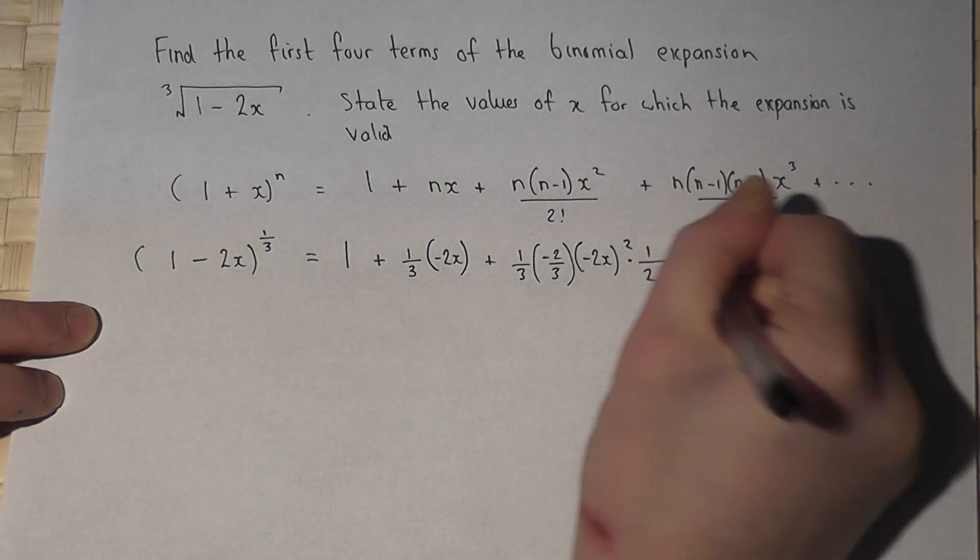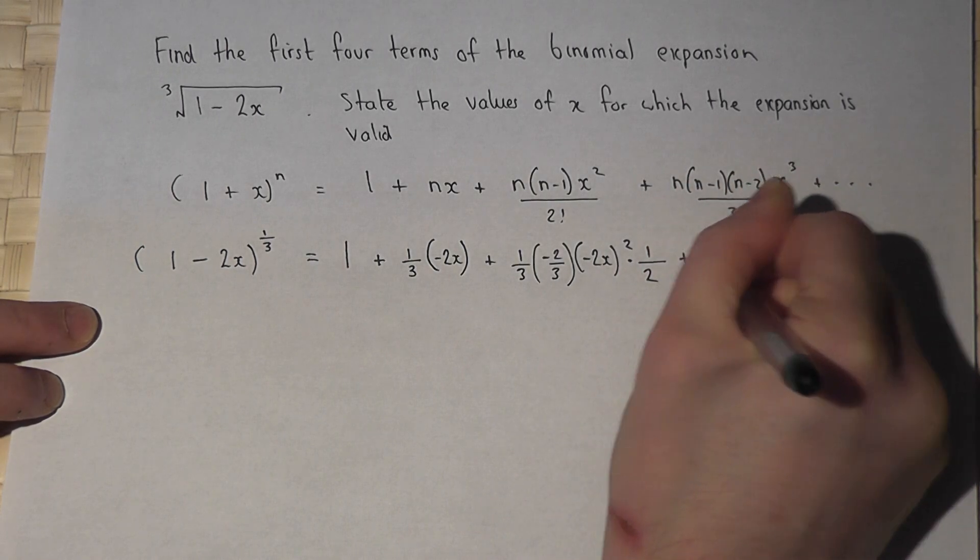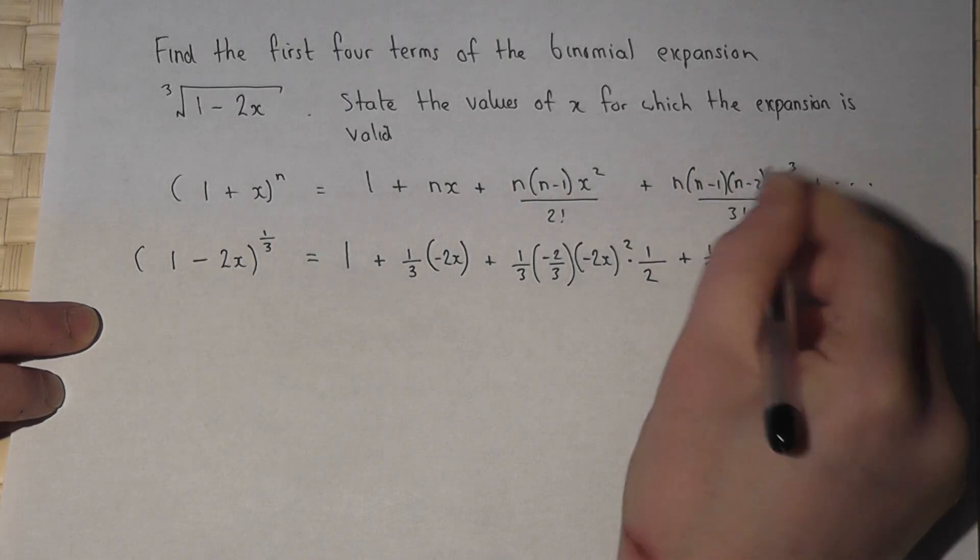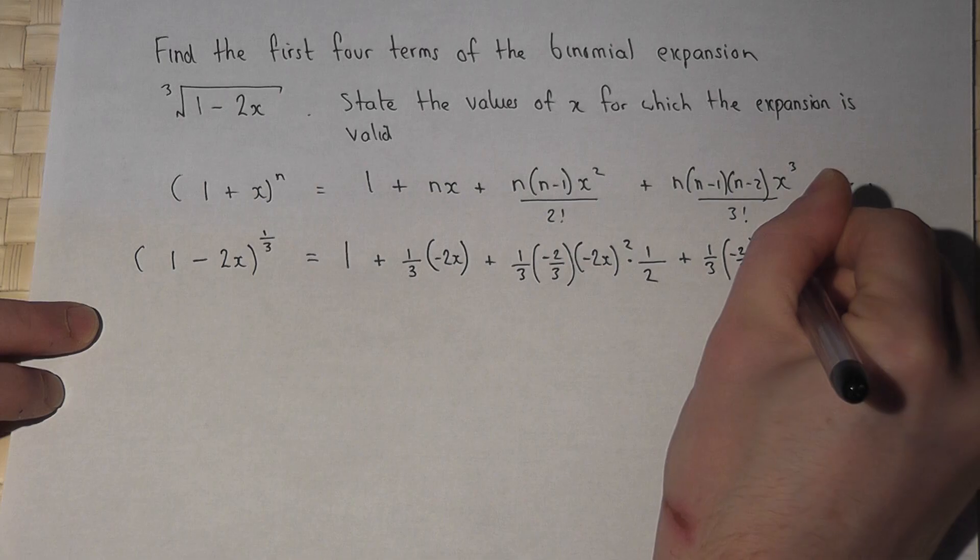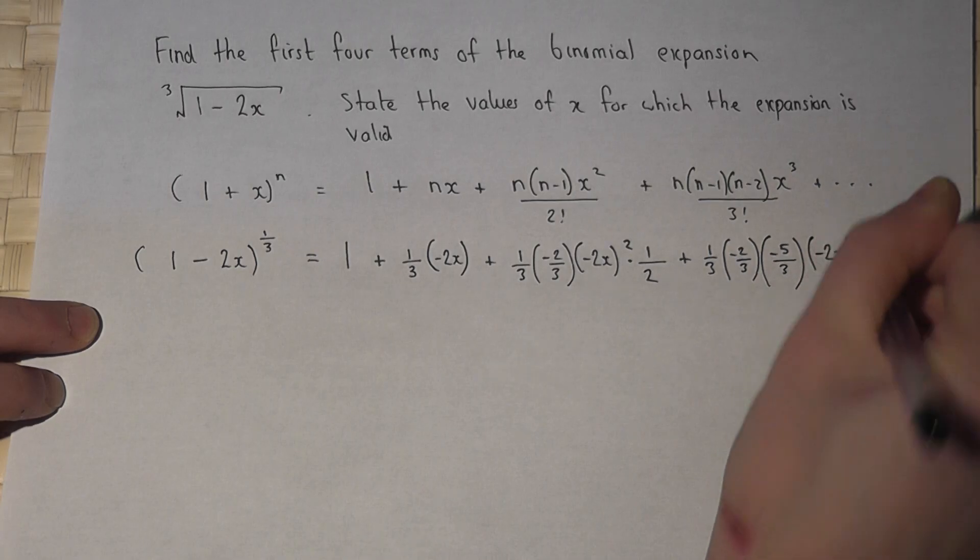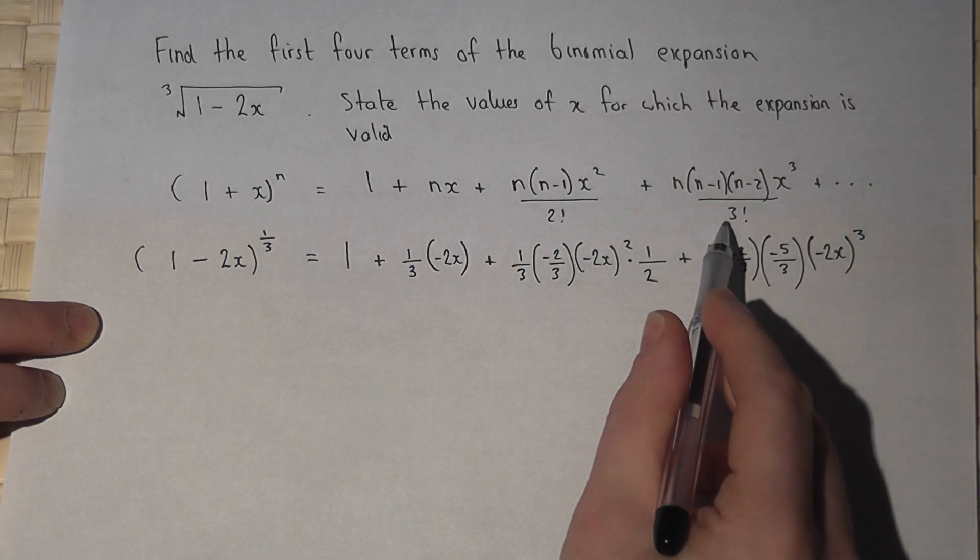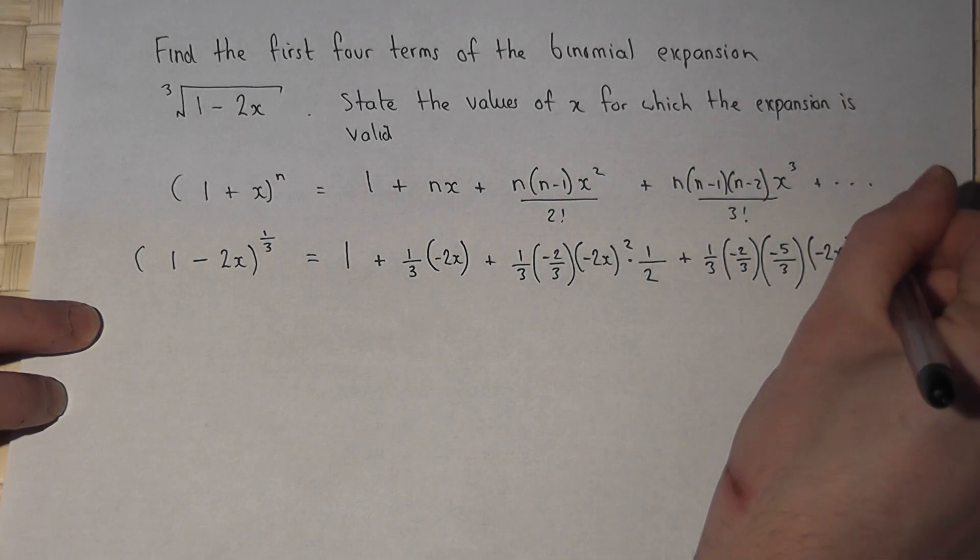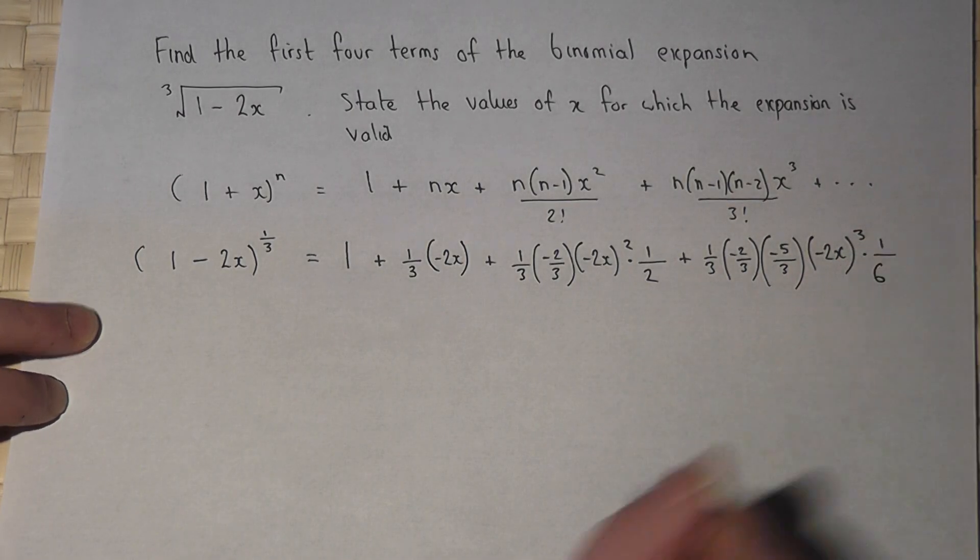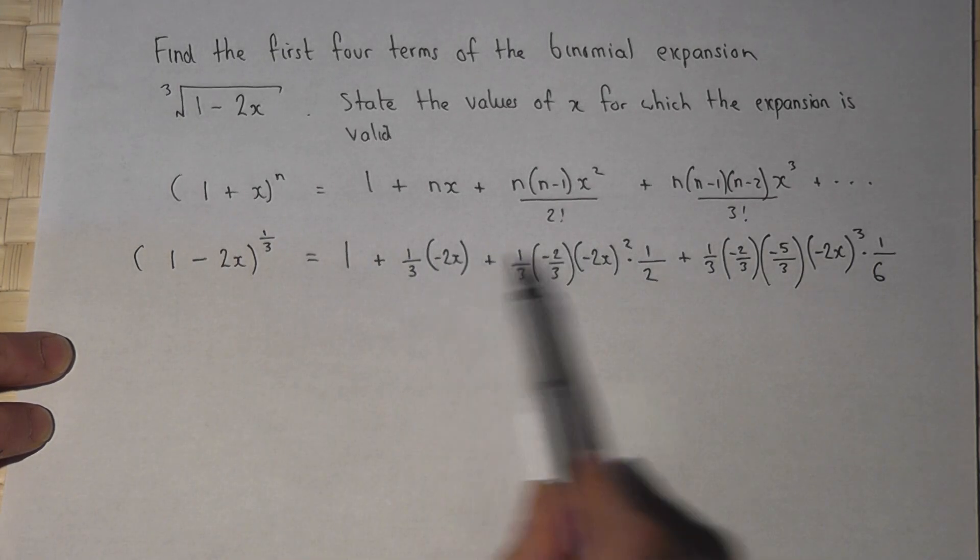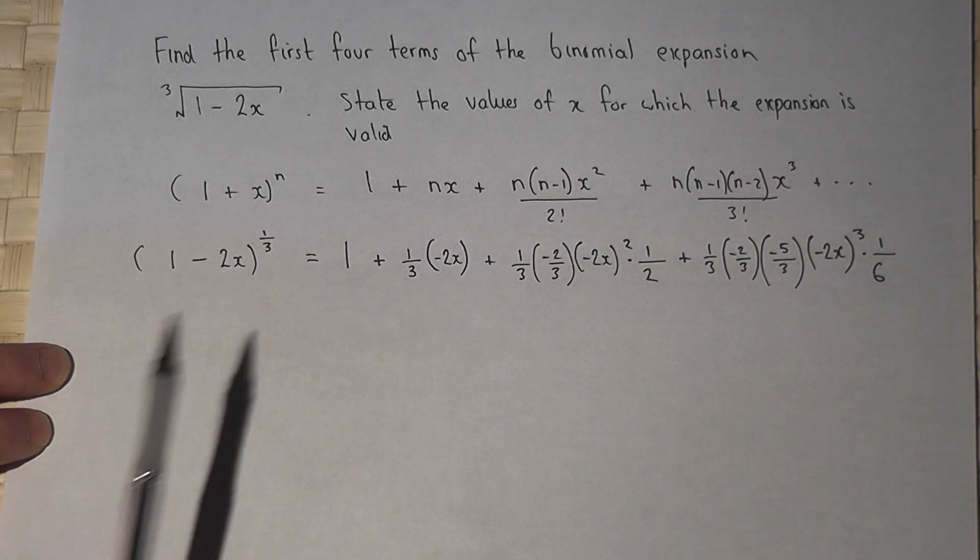And the fourth term will be a third. A third take 1 is minus 2 thirds. Take away 2 is minus 5 thirds. It's going to be a minus 2x to the power of 3. 3 factorial which is 6. So it's basically times by 1 over 6. So this is the general expansion up to the fourth term.